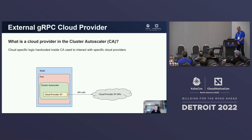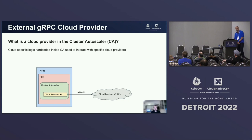Cluster Autoscaler supports many cloud providers — I think almost 30 at the moment — and the specific implementation for each cloud provider is coded in the Cluster Autoscaler itself. It is abstracted by a couple of Golang interfaces and runs in the same process as the Cluster Autoscaler. So in the context of CA, a cloud provider is the specific implementation that lets the CA talk to the cloud provider APIs.